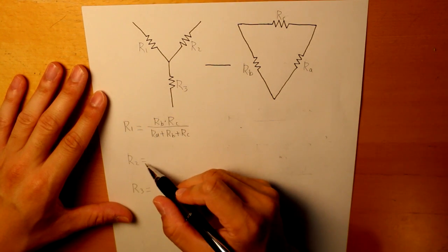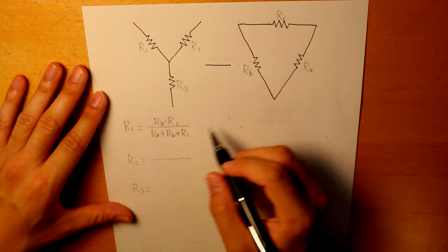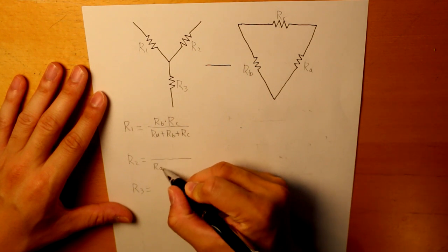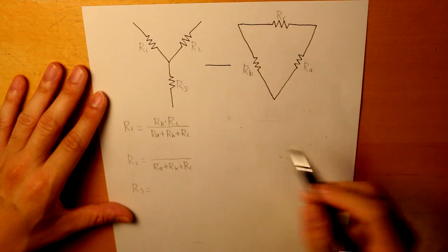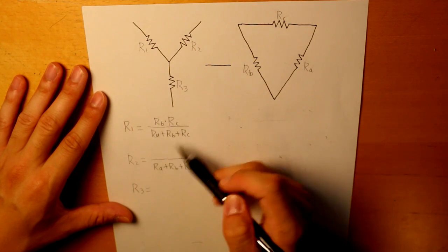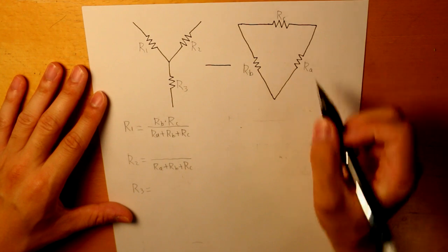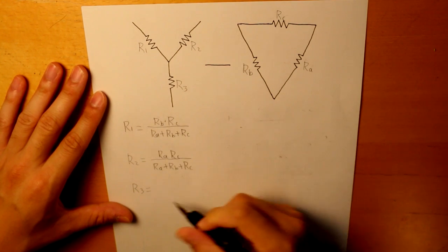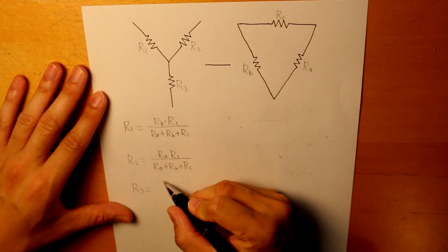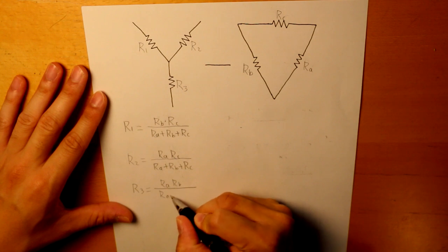For R2, the denominator is the same — RA plus RB plus RC — and the numerator consists of the two non-equivalent resistors, which is RA times RC. And then for R3, the numerator is RA times RB, with the same denominator.